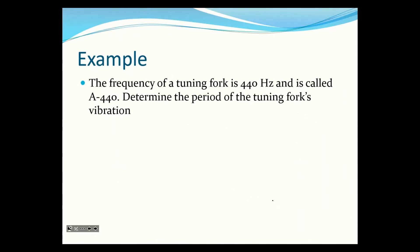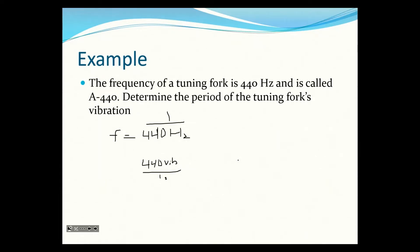The frequency of a tuning fork is 440 hertz — called A440, an A note. To determine the period of the tuning fork's vibration, since frequency is 440 hertz, you just take one over it. 440 hertz means it does 440 vibrations every second, so the period should be very small: 1 over 440 gives 0.00227 seconds — that's how long one vibration takes.